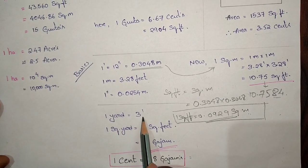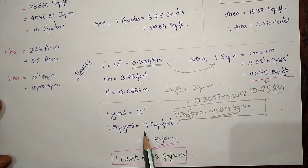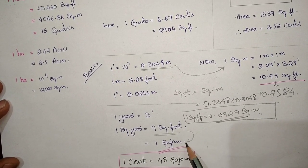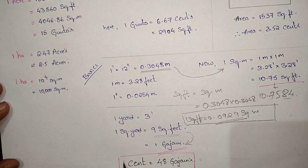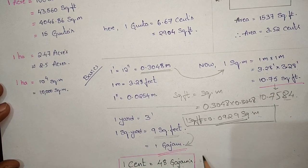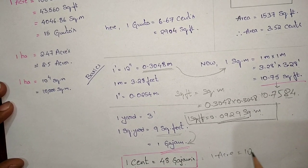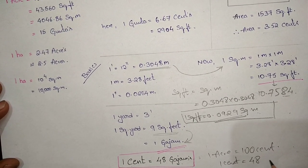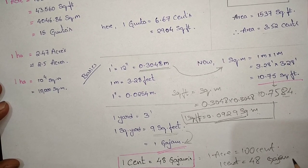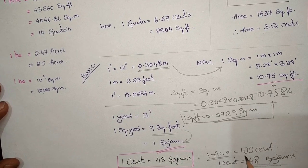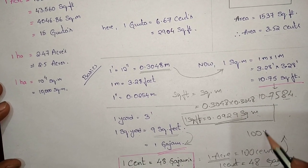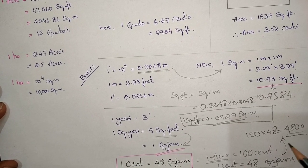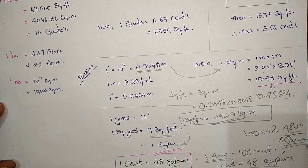Coming to feet to yard conversions: one yard equals three feet, so one square yard equals three feet by three feet, which gives nine square feet. Nine square feet is also known as one gunda. So one square yard equals one gunda, and one cent equals 48 gundas. Since one acre equals 100 cents, one acre equals 100 multiplied by 48, which is 4800 gundas.